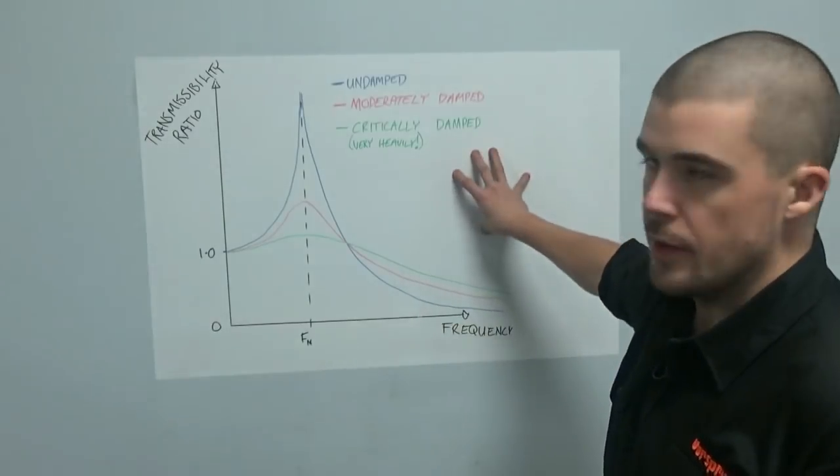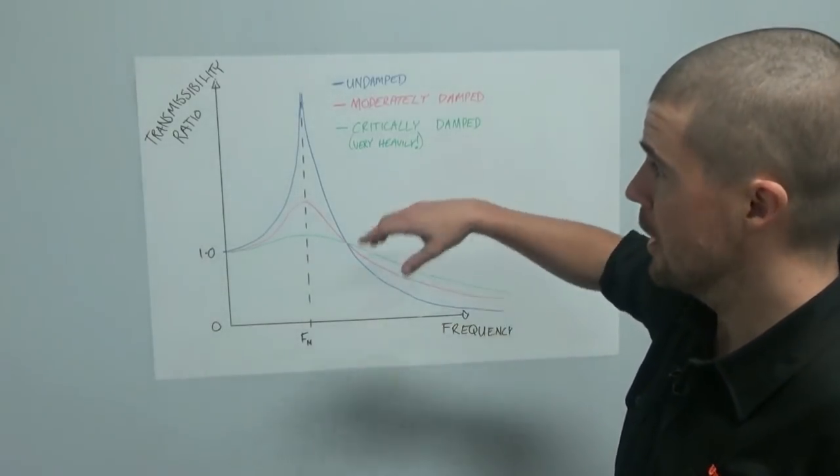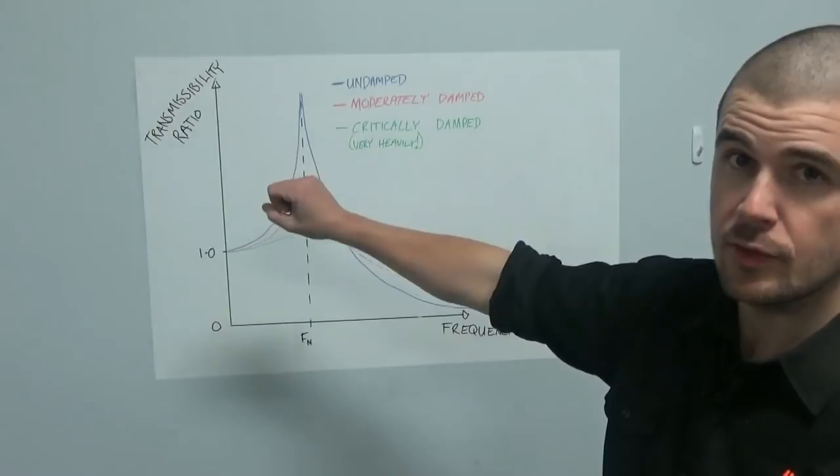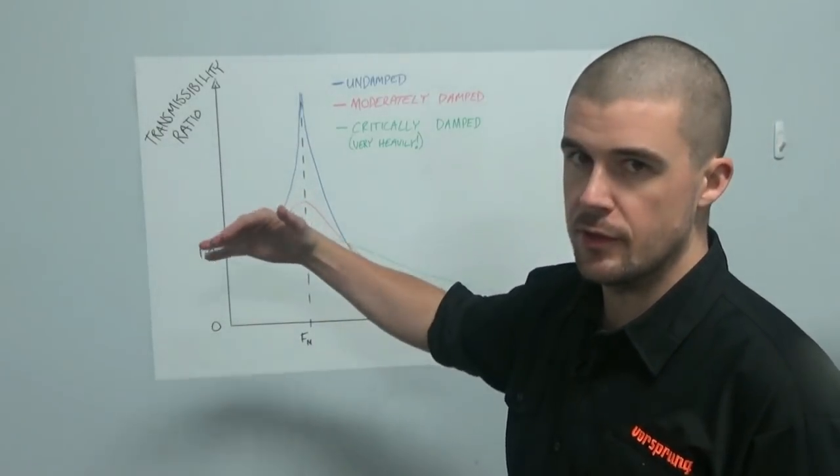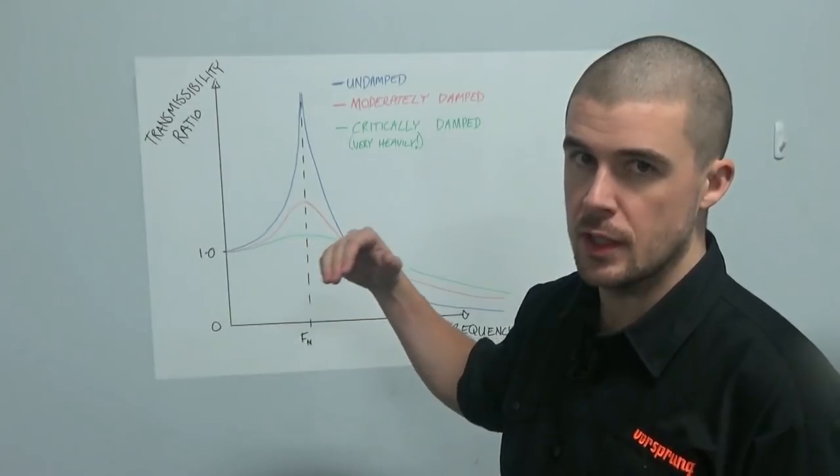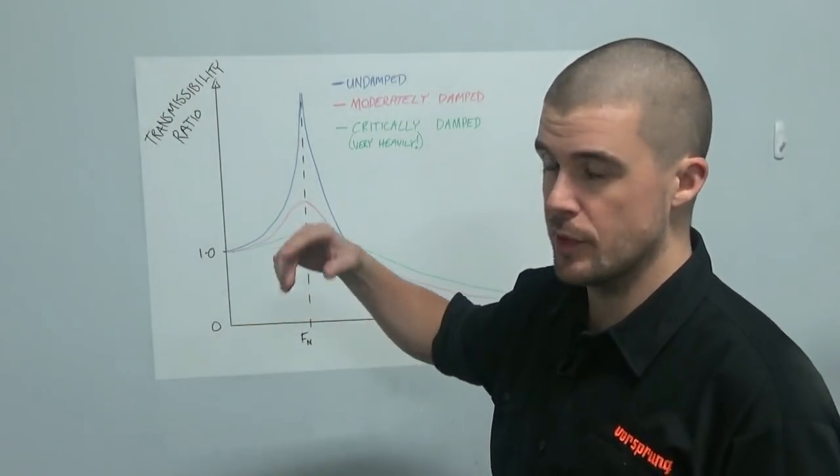What we have a very poor graph of right here is vibration transmissibility. What that basically means is what the input is in terms of force and displacement versus what the output is.